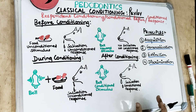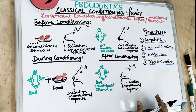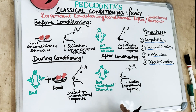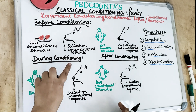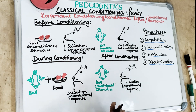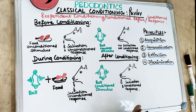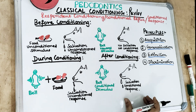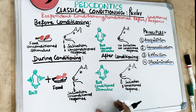Extinction means if you ring the bell every time and don't give food to the dog, the response will become extinct — it will finish. There will be extinction of response to the conditioned stimulus, and the dog will no longer salivate to the bell.